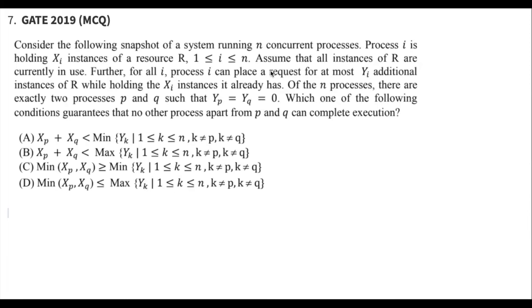Process I can place a request for at most YI additional instances of resource R, while it already holds XI instances. Of the N processes, there are exactly two processes P and Q such that YP equals YQ equals zero. Which of the following conditions guarantees that no other process apart from P and Q can complete its execution?